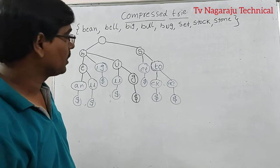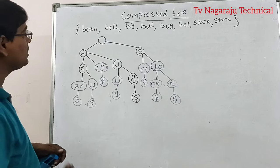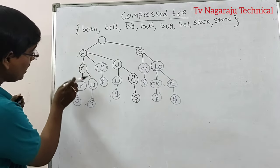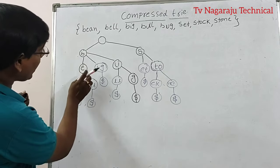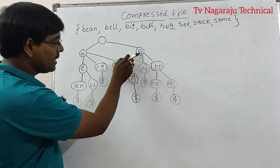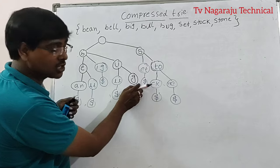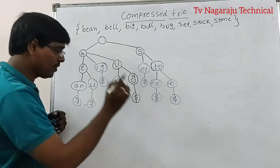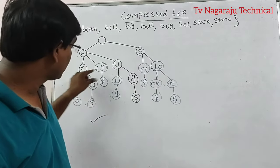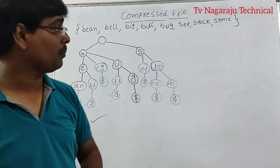Let's verify. Take any path and check the strings are generated: B-E-AN → bean; B-E-LL → bell; B-IG → big; B-U-LL → bull; B-U-G → bug; S-ET → set; S-TO-CK → stock; S-TO-NE → stone. This is the compressed trie — compressing nodes such that each node has only one path.